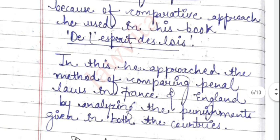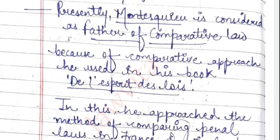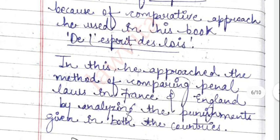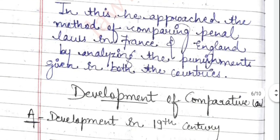In his book, Montesquieu approached the method of comparing the penal laws in France and England by analyzing the punishments given in both countries. That is why he is known as the father of comparative law. If this question appears in an exam, mention that Montesquieu used a comparative approach in De l'Esprit des Lois, comparing penal laws of France and England by analyzing the punishments of both countries.